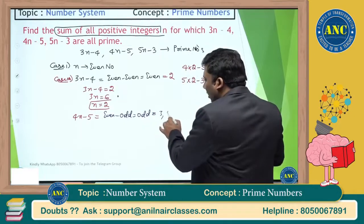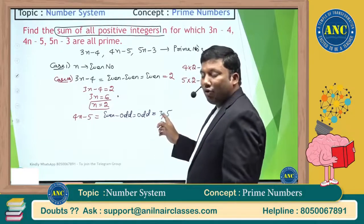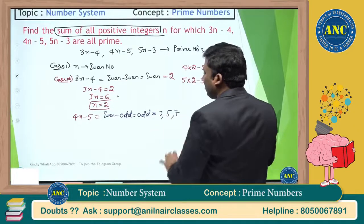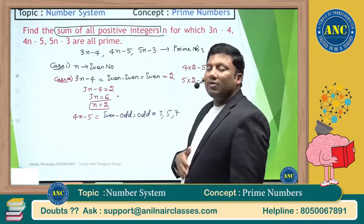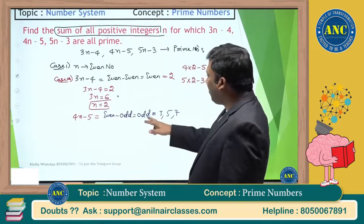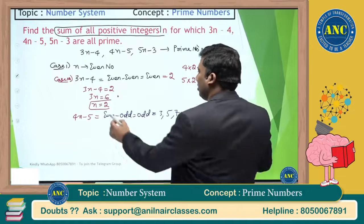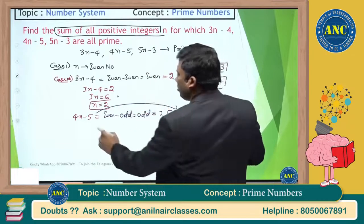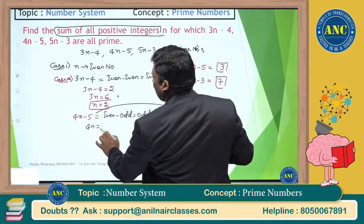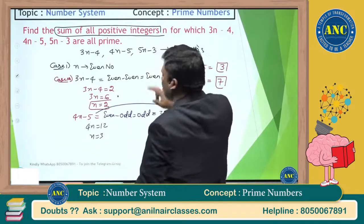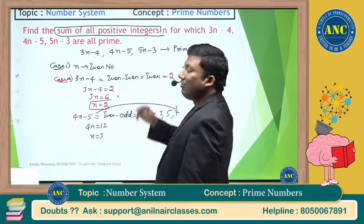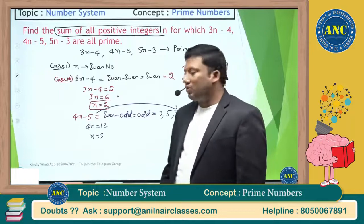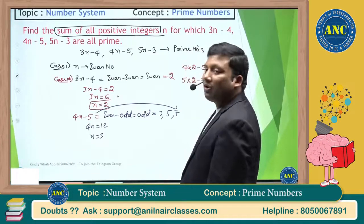If 4n minus 5 equals 5, then 4n equals 10, n is a decimal — not possible. If 4n minus 5 equals 7, then 4n equals 12, n equals 3. But substituting n=3: 5(3) minus 3 = 15 minus 3 = 12, which is composite — not valid.